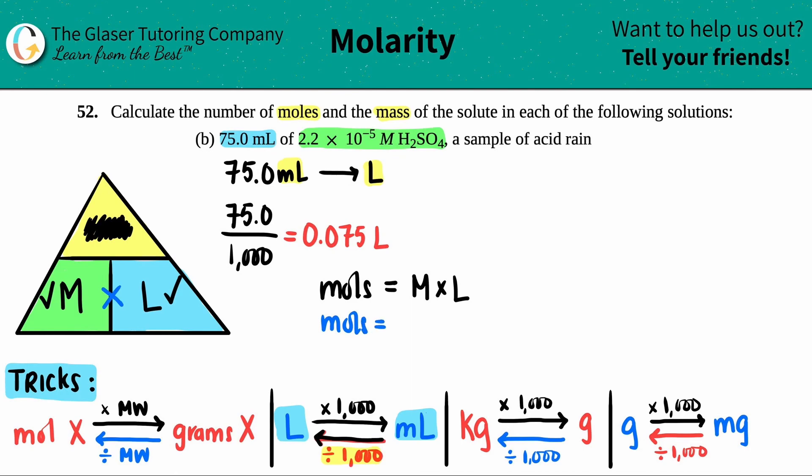Now all we have to do is solve for the moles of the solute. In this case, H2SO4. The moles of H2SO4 equals the molarity (2.2 times 10 to the negative 5) times the liters (0.075). The moles of the solute H2SO4 would be 2.2 times 10 to the negative 5 times 0.075. Rounding with sig figs, there's a minimum of two sig figs here—this one has two and this one has three. Technically I should have added a zero at the end to signify three sig figs, but our answer would be two sig figs. So 1.7 times 10 to the negative 6, and that's the moles of H2SO4. First part done.